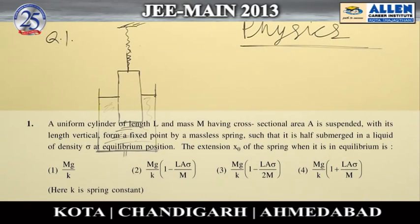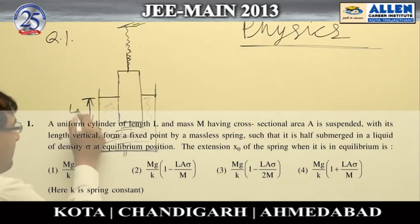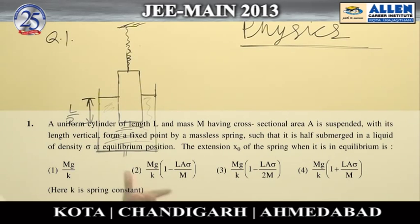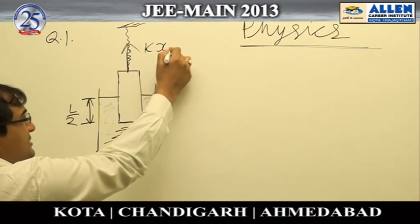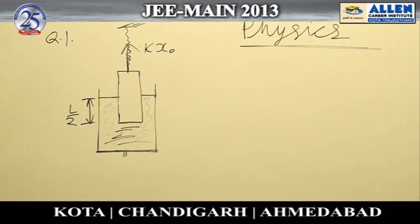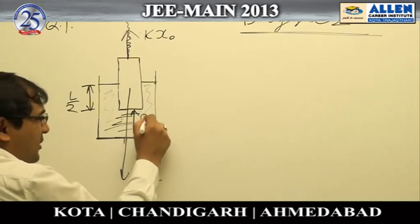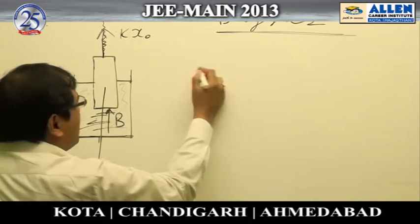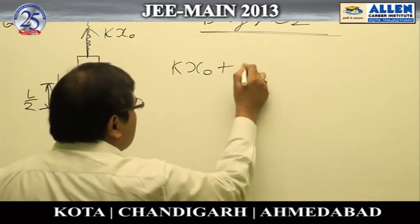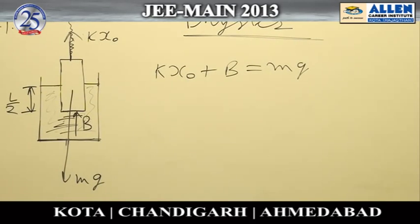This is the solution to question number one. We can see there is a cylinder immersed in a liquid — only half the length of the cylinder is inside the liquid and it is in equilibrium. We write all forces acting on it: a spring force kx₀, the weight of the cylinder mg, and the buoyancy force. These three forces are balanced, so we write: kx₀ plus buoyancy equals mg.